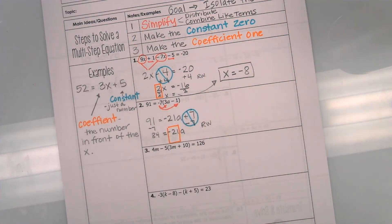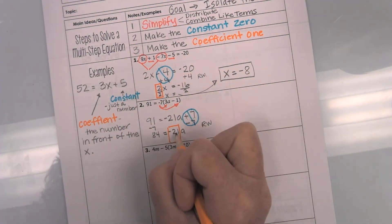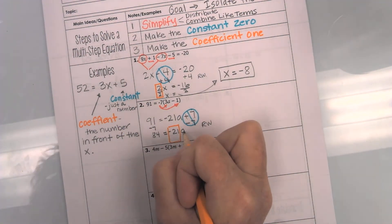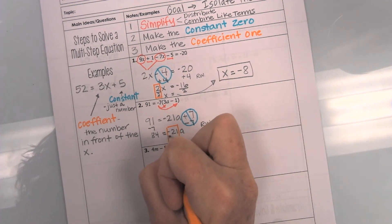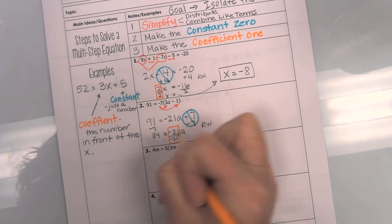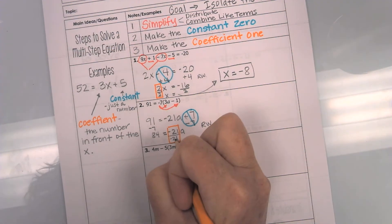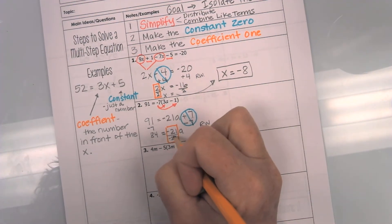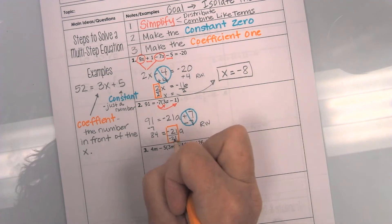Okay, how do I make this coefficient a 1? Well, since this is negative 21 times a, I am going to divide it to undo it. So, negative 21 divided by negative 21 is a 1. Okay, it is looking fat, huh? Okay, now,